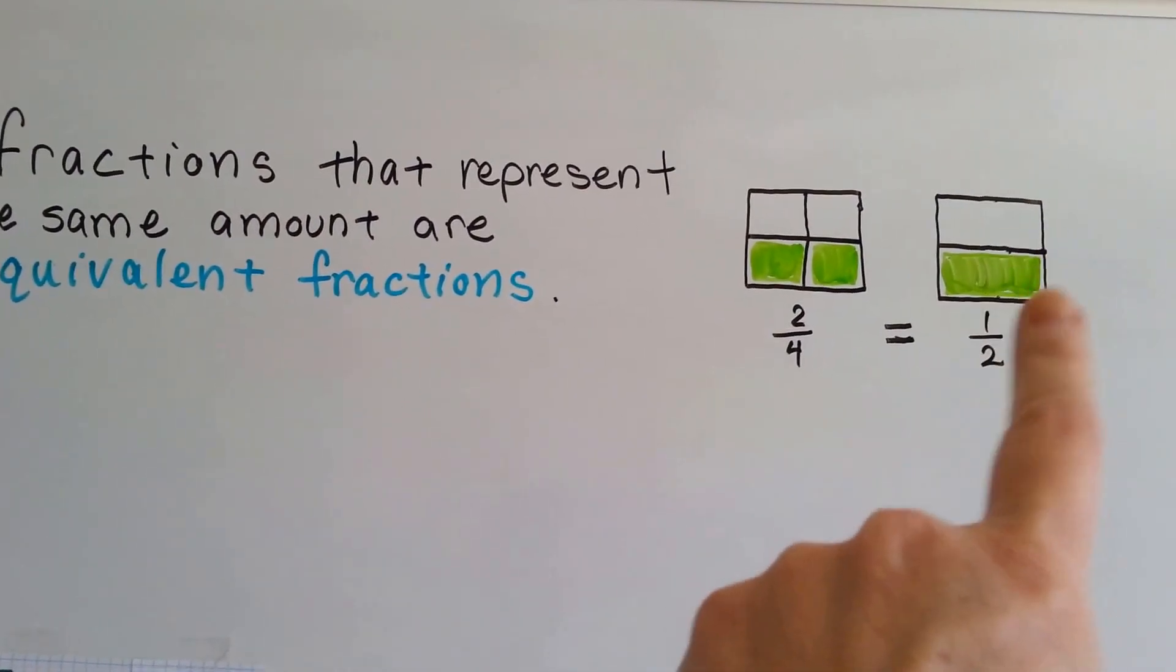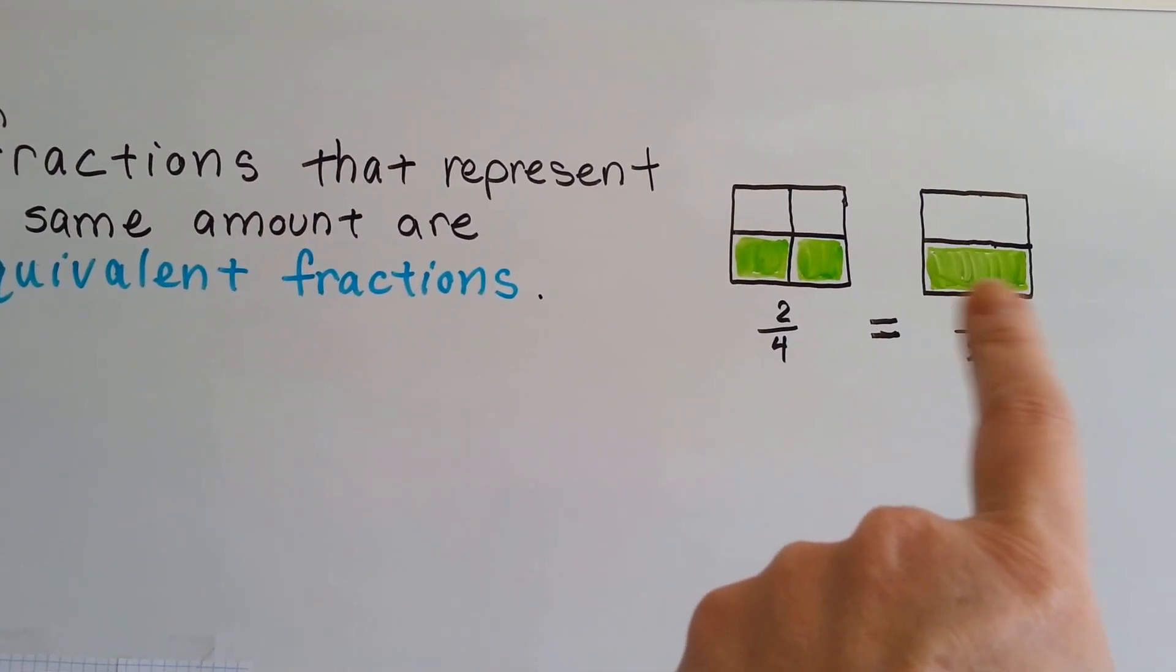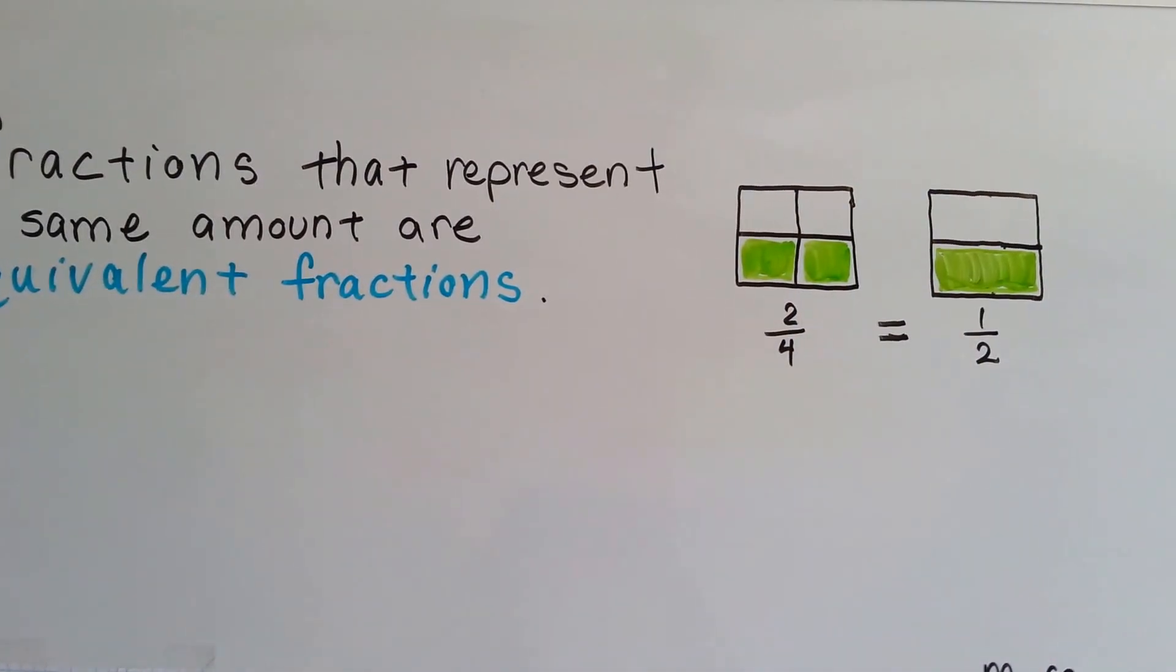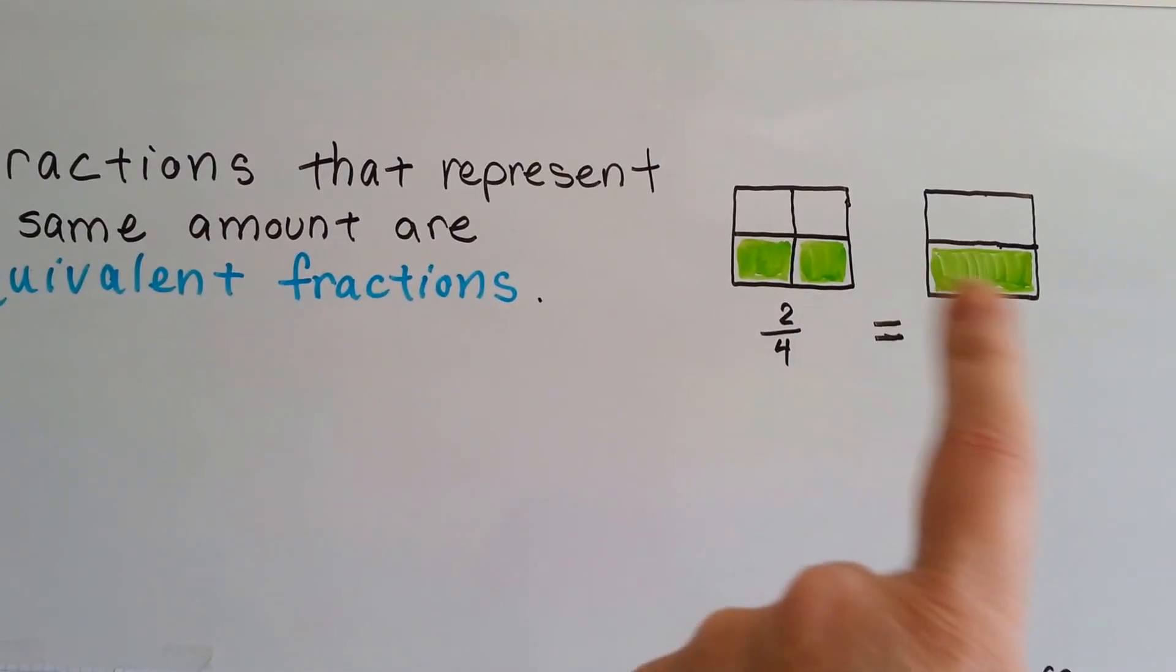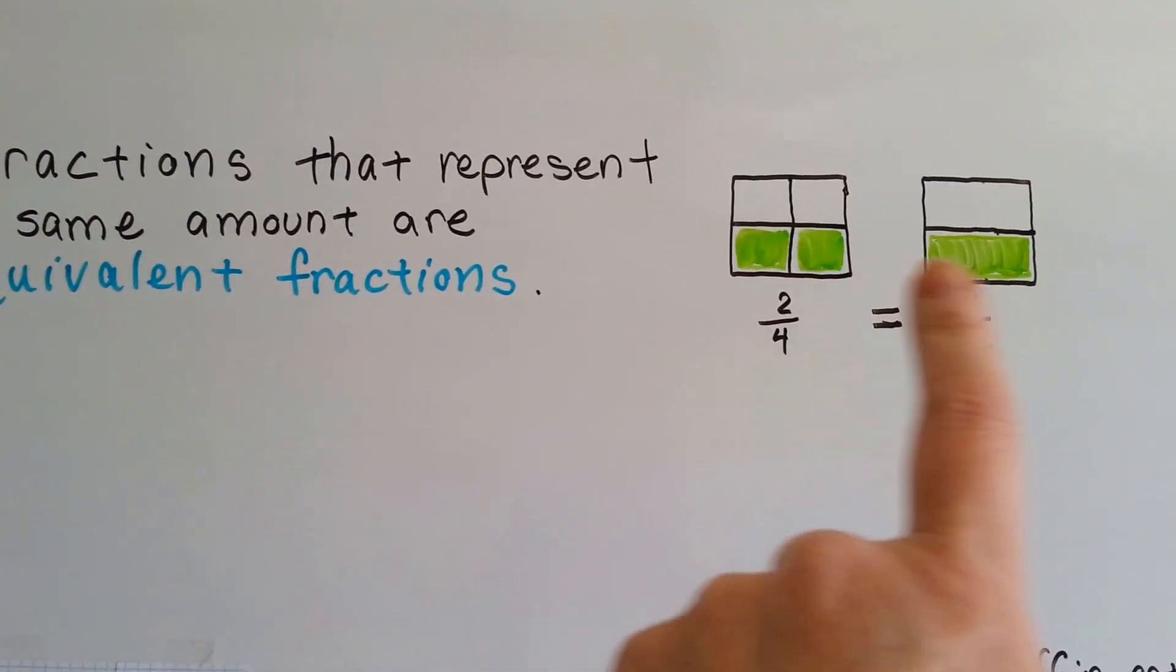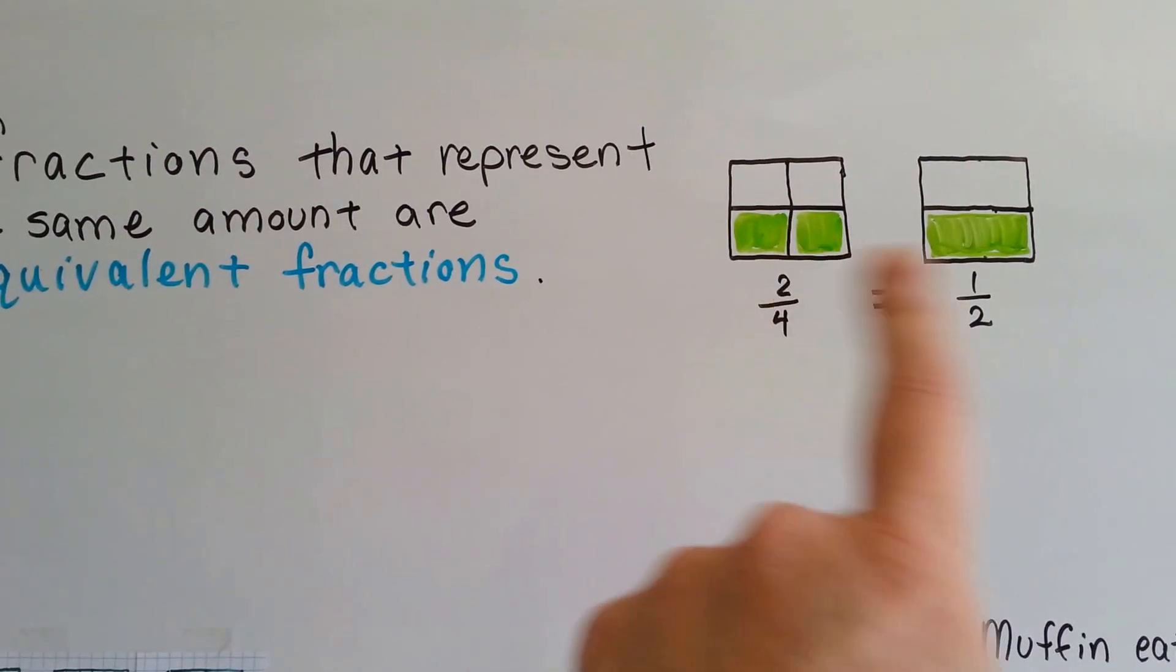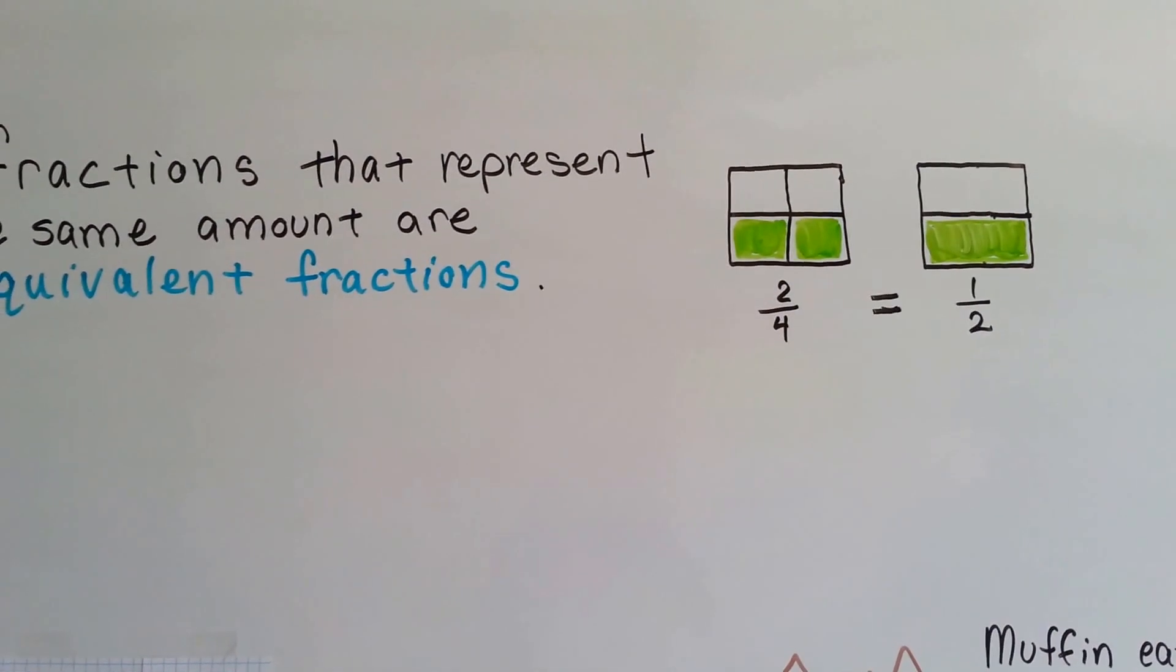and this is broken into two parts and one is green, if the squares are originally the same size, then the fractions are equivalent. Two of these are equal to one of those. All you have to do is take this little line away, and you can see that it would be the same amount.